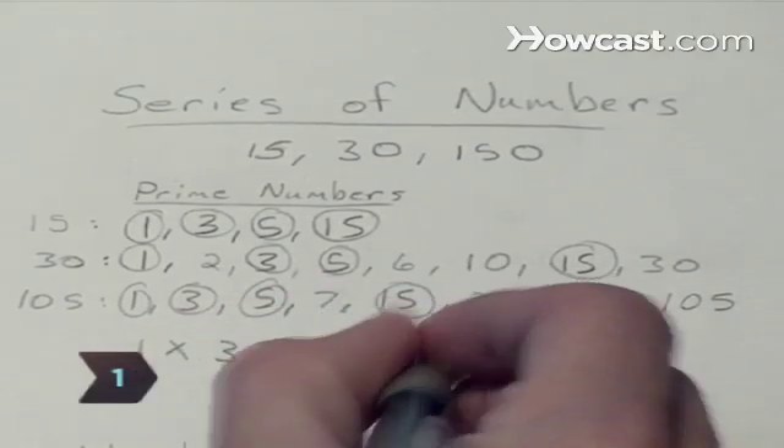Step 1. Factor each number in a series of numbers completely into its primes. Identify the common factors for each number, and then multiply the common factors together. A prime number is a positive integer that is not itself the product of two smaller positive integers.